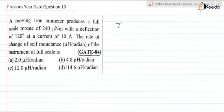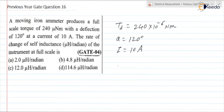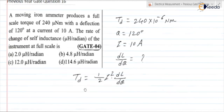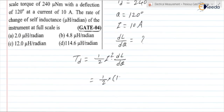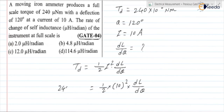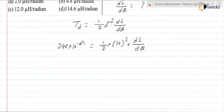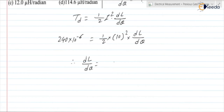We need to find dL/dθ. It is given that Td is equal to 240 into 10 to the power minus 6 newton meter. θ is given as 120 degrees — it is not required actually. Current I is 10 ampere. Our task is to find dL/dθ. As we know in the MI instrument, Td is equal to half into I squared into dL/dθ. So it is equal to one-half into I squared — current I is 10 ampere — into dL/dθ, and Td is 240 into 10 to the power minus 6.